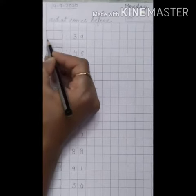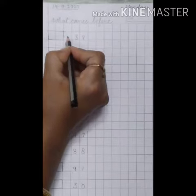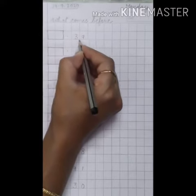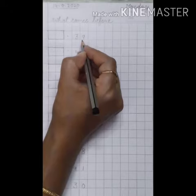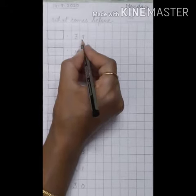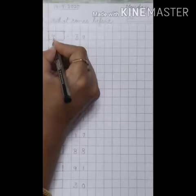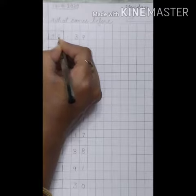Then draw a box like this. Put a dot here. Write 39, 39. What comes before 39? 38, 39. 38 comes before 39.